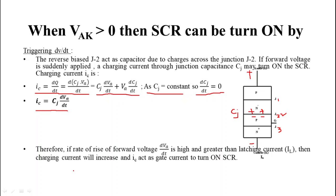If rate of change of anode voltage is sufficient enough to make IC greater than IL, where IL is latching current, so if this IC becomes greater than IL then SCR gets turn on. In other words we can say that IC act as gate current to turn on SCR.